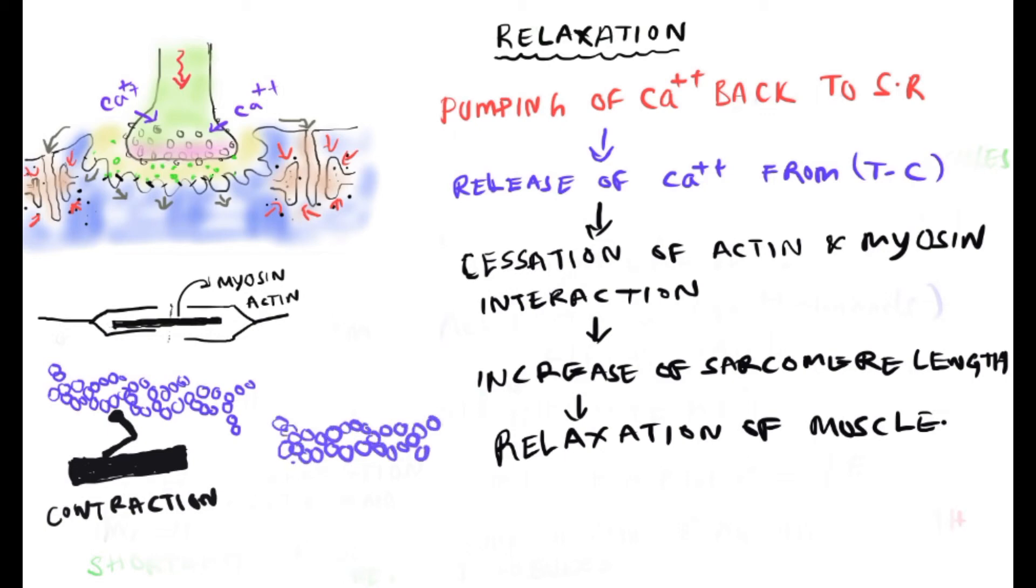the myosin head pulls the actin filaments towards the H line. During relaxation, the myosin head releases the interaction. This is called the re-cocked position, where ATP splits into ADP and inorganic phosphate.